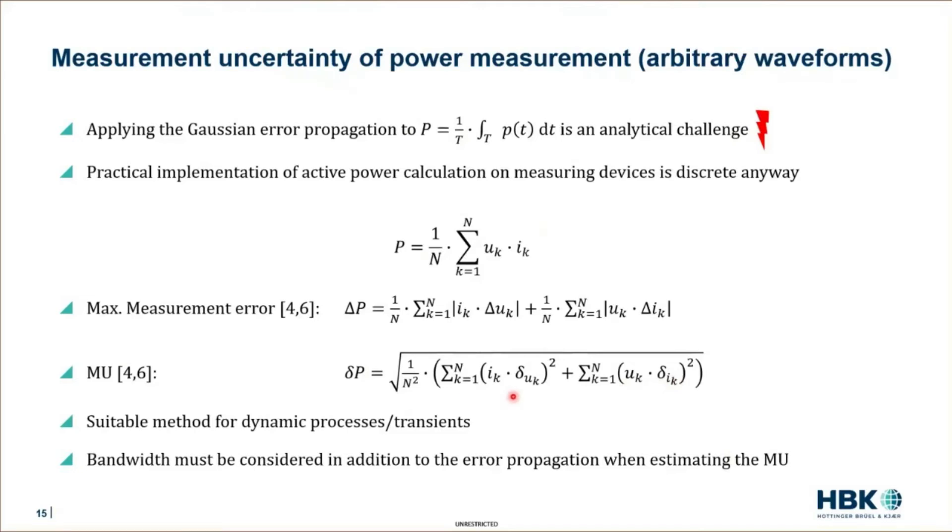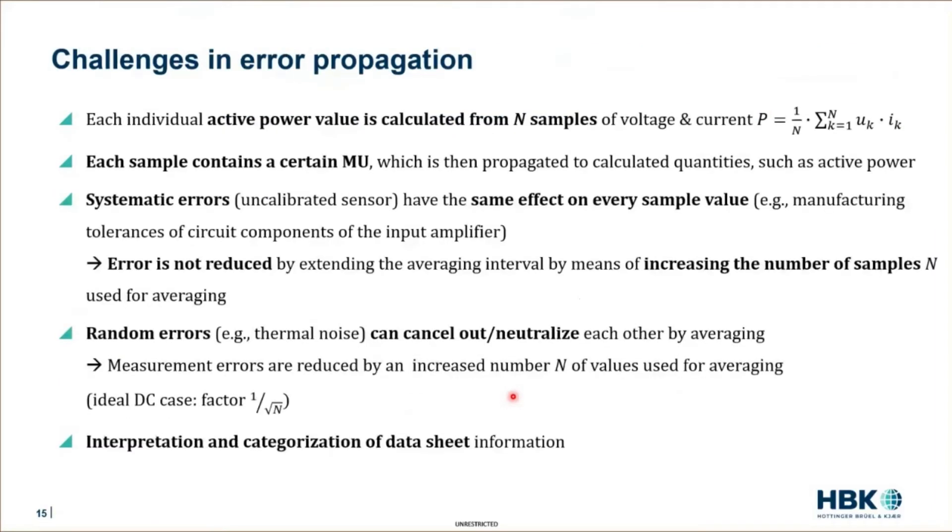But now the question is, what are the main challenges by evaluating this? It's obvious that each individual active power value is calculated from the number of n samples of voltage and current. And each of these voltage and current samples then again contains an amount of measurement uncertainty, which propagates to the active power.